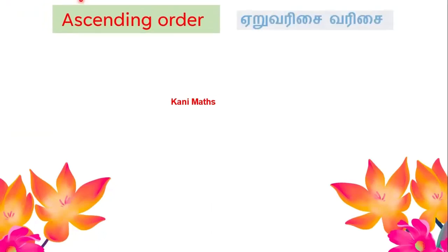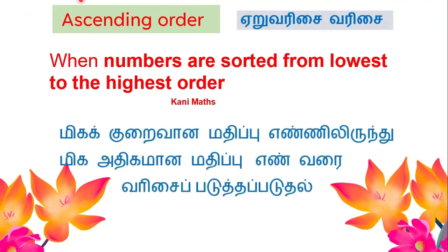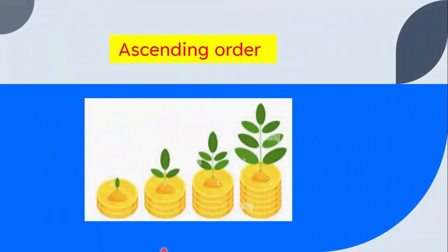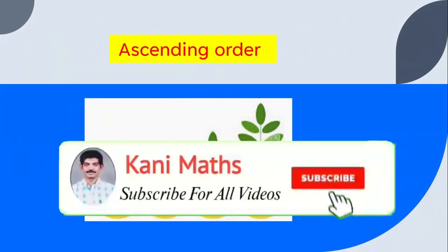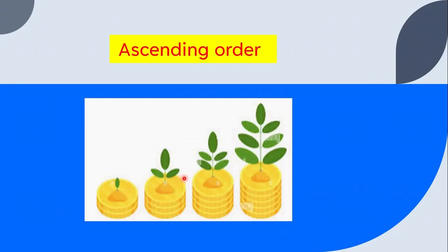First, ascending order — when numbers are sorted from lowest to highest order, that means from the smallest value to the largest value, that is called ascending order, also known as small to big. For example, starting from 5 and increasing as we go — that is the ascending order.